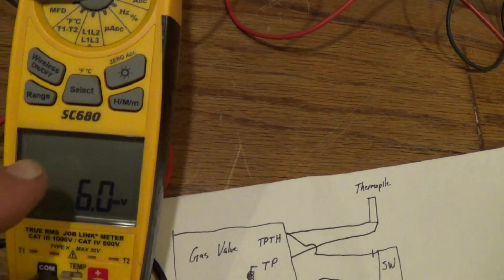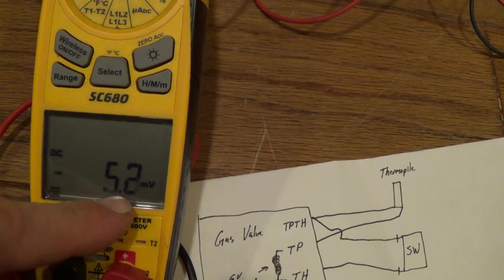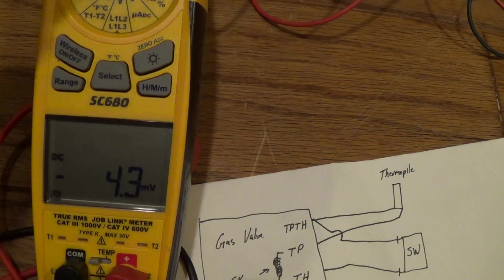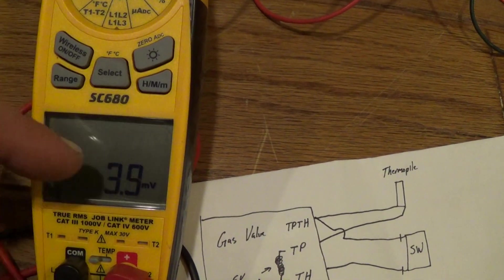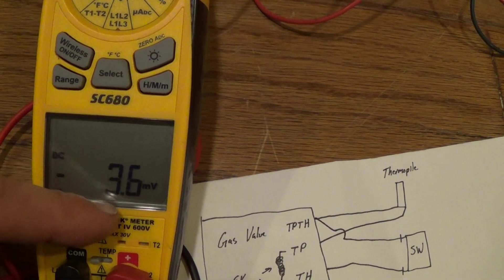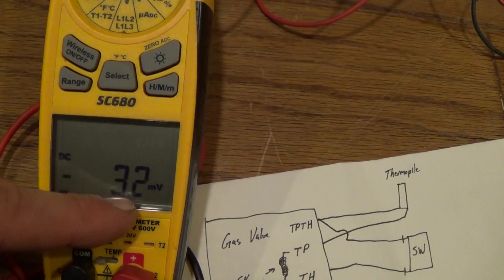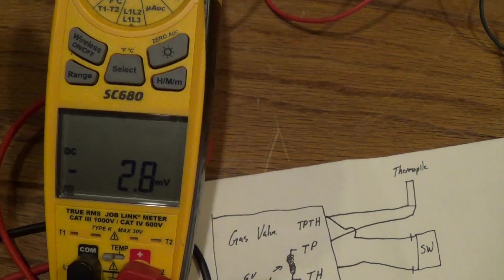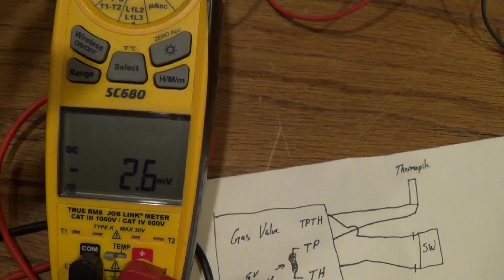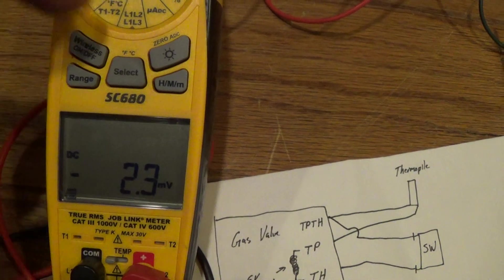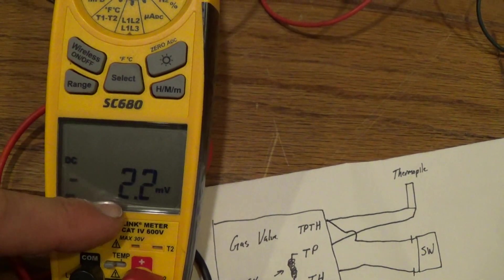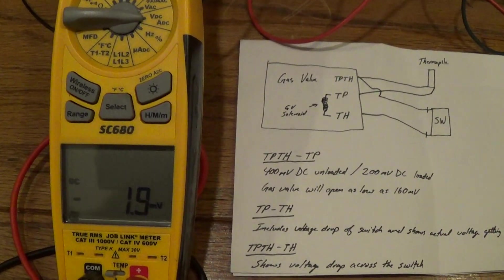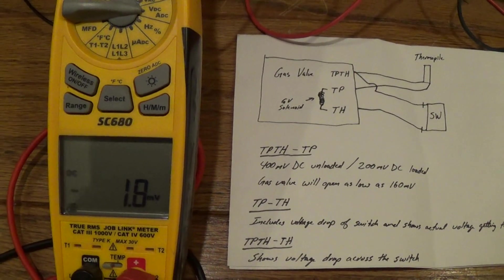If I turn the pilot off—so the pilot's off now—you can see this start to drop. A lot of gas valves have safeties. Do you hear that click? That's the gas valve resetting because the thermocouple voltage dropped down low enough where one of the solenoids is releasing and allowing the gas valve to be lit again.